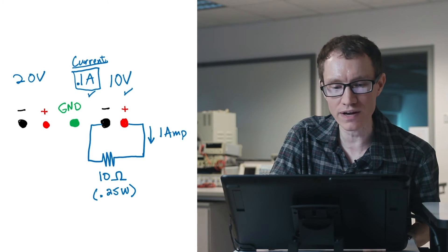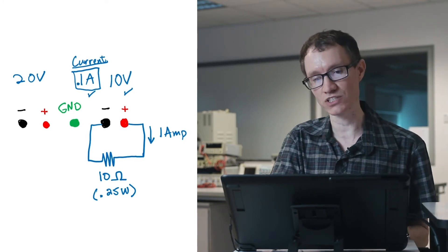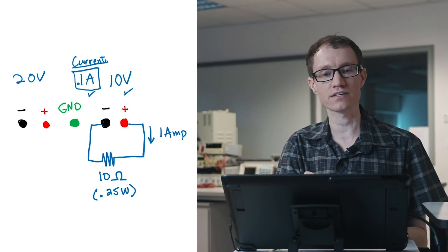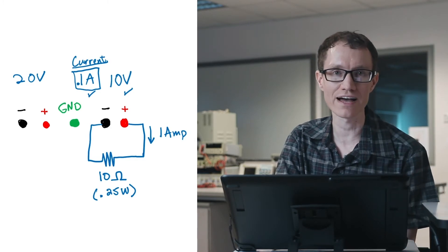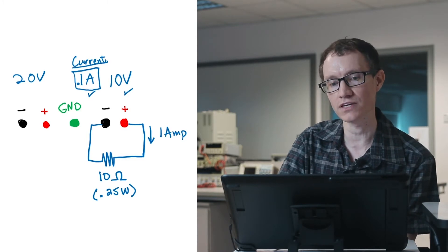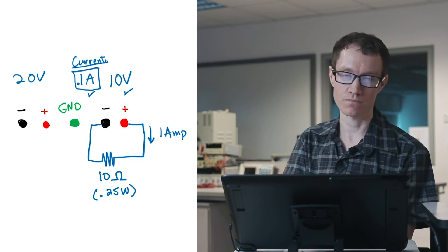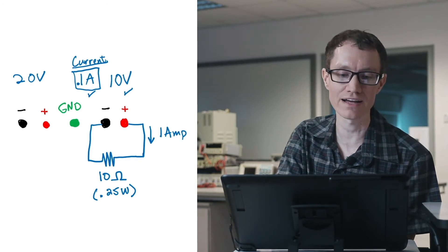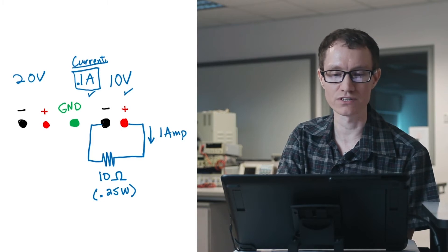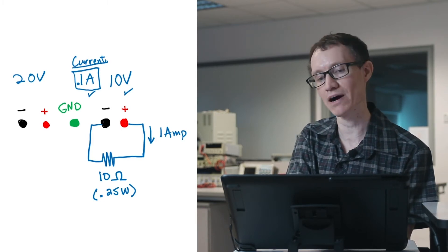For example, if I dial in 0.1 ampere before the output is switched on, then it means that for whatever voltage I dial in, that voltage might not actually be output if the supply senses that the current will be exceeded. So, what would happen if I try to dial in 0.1 amperes and 10 volts with a 10 ohm resistor hooked up to the power supply?